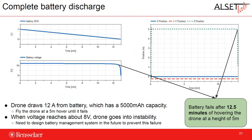Next we looked at what happens when we completely discharge the battery and when the system fails. We connected the drone to a fully charged 11.1-volt three-cell battery, let it fly up to five meters, and then hovered to see how long it could sustain flight. Based on how the batteries are modeled, they run at a roughly constant voltage until they hit a certain state of charge, then hit a knee voltage and drop off completely. The drone draws about 12 amps from the battery, which has a 500 milliamp-hour capacity, so as expected the drone fails around 12.5 minutes. When the voltage reaches eight volts, the drone goes into an unstable state. In real life this might not happen — we want to design a battery management system to land the drone and track state of charge before such failure occurs.